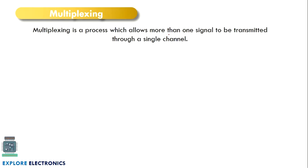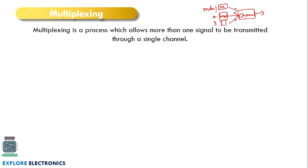The definition says multiplexing is a process which allows more than one signal to be transmitted through a single channel. In the communication block diagram, there will be a channel, and we will be modulating the signal before giving it to the channel in a transmitter. So if you have multiple modulating signals — signal one, signal two, signal three — can we transmit these three with a single channel? The answer is yes, and that process is called multiplexing.